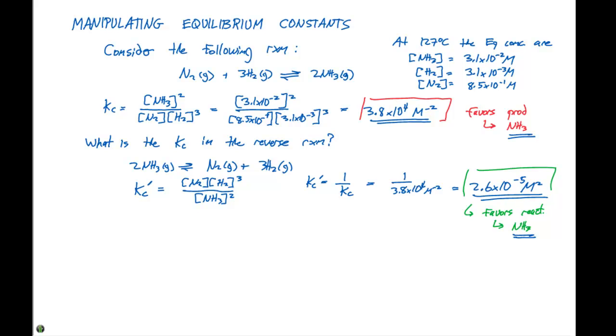So what happens now if we ask for the Kc for 2N2 as a gas plus 6H2 gas in equilibrium with 4NH3 gas.